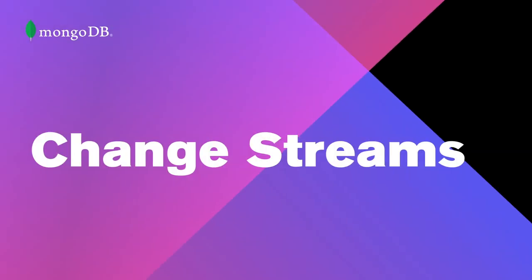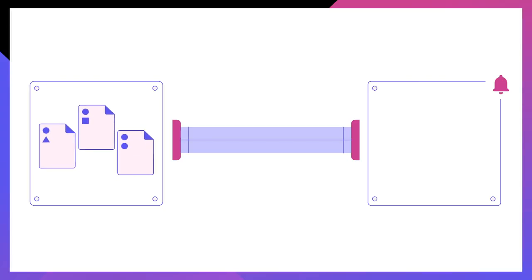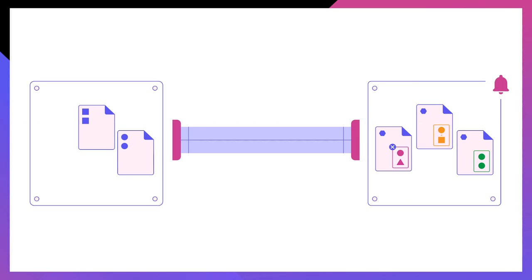For each one, I'll explain what it is and then walk through an example of how to use it. Let's kick things off with change streams. Change streams allow you to receive notifications about changes made to your MongoDB databases and collections. When you use change streams, you can choose to program actions that will be automatically taken whenever a change event occurs. Change streams utilize the aggregation framework, so you can choose to filter for specific change events or transform the change event documents.